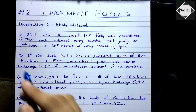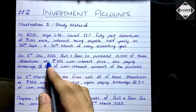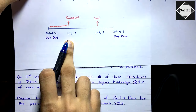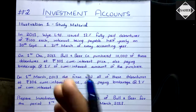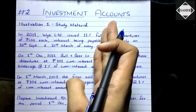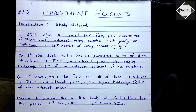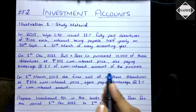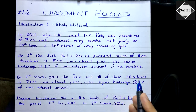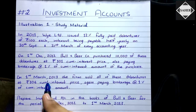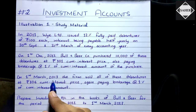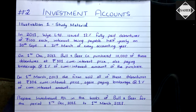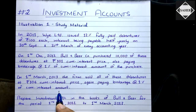On 1st December 2012, Bull and Bear Company is purchasing the debentures. We are preparing the investment account from the point of view of the investor — Bull and Bear Company — not Y Limited. On 1st March 2013, the firm sold all of these debentures at ₹106 cum-interest price, again paying brokerage at 1% of the cum-interest amount.